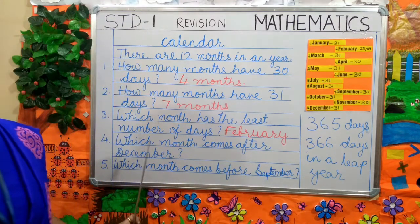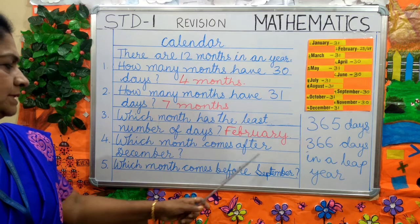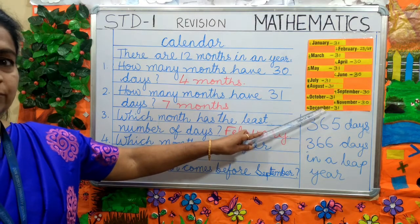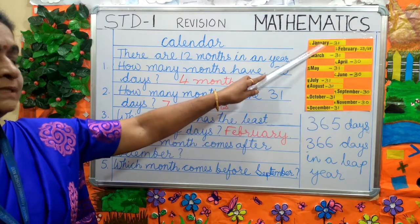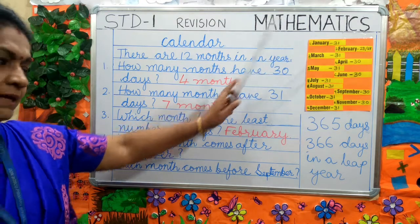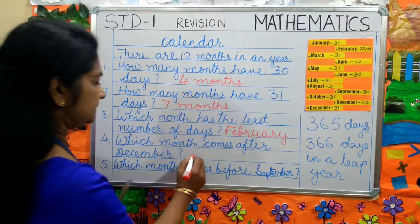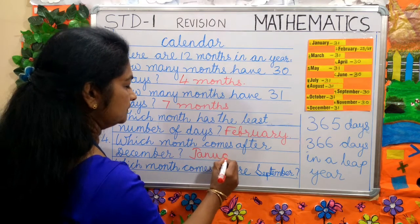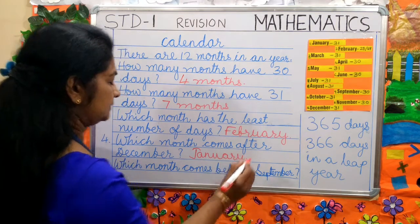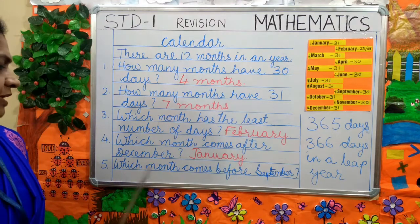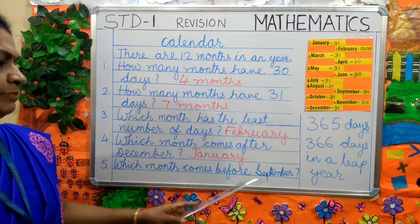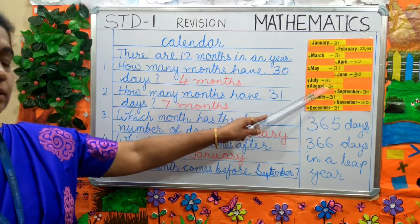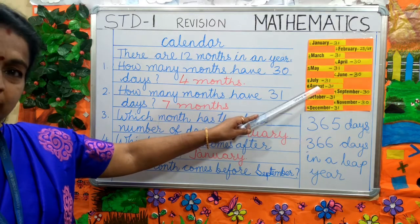Next question: which month comes after December? December is the last month of the year. Then again January will come. Next question: which month comes before September? Before September, August will come.